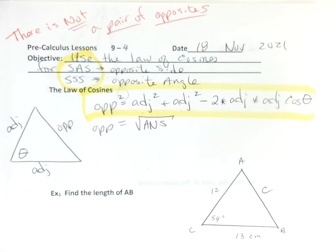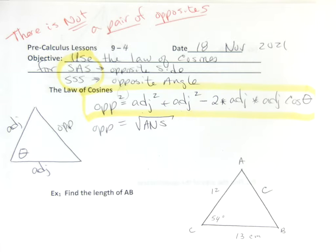It doesn't matter which one. You could go 12 squared plus 13 squared or 13 squared and 12 squared, it doesn't matter. And 12 times 13 — you have to have one in each spot. Then you have to have side angle side. So you must have side angle side. Does that make sense? That's what you're asking, Warren.